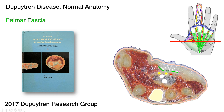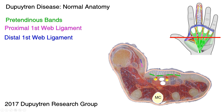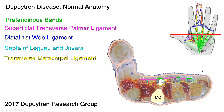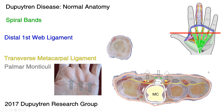I took pictures from Roy Meal's atlas of forearm and hand cross-sectional anatomy and marked them up with color-coded cartoon areas corresponding to cross sections using the same colors we've been using. Starting in the proximal palm we have the palmar fascia and the vertical anchoring fibers that hold it to the skin. A little more distal we have the palmar fascia split into the pre-tendinous bands with origins of the first web space ligaments. Further out, the superficial transverse palmar ligament crosses hugging the undersurface of the pre-tendinous bands.